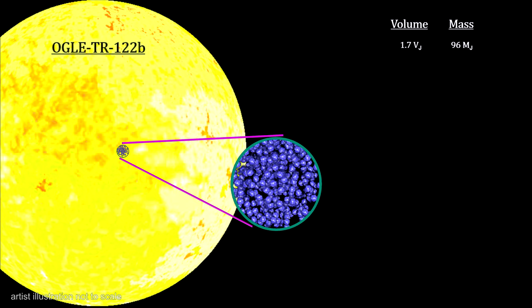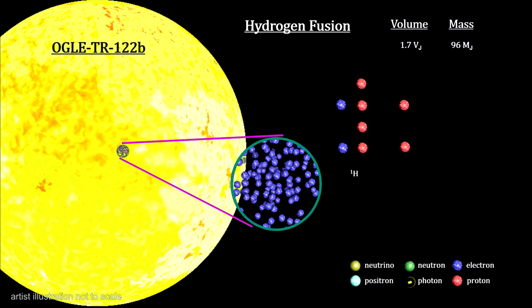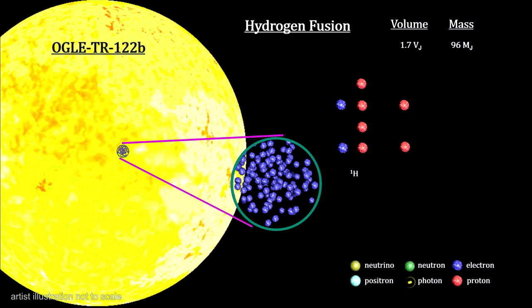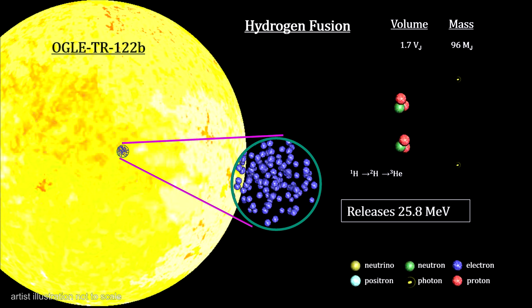It's around 96 Jupiter masses, but with only a 16% larger radius. The conditions in the core are so extreme that hydrogen fusion begins. That's what makes it a true star.